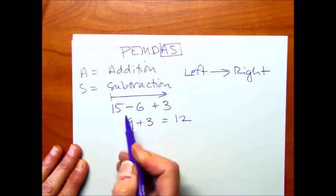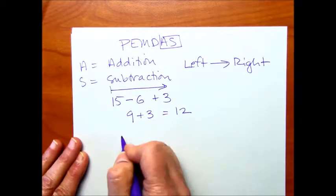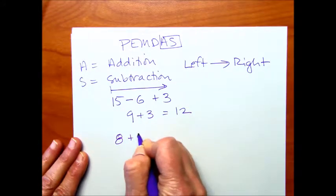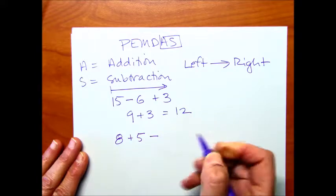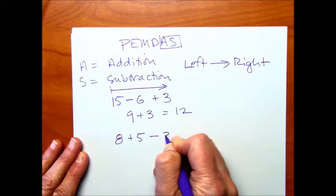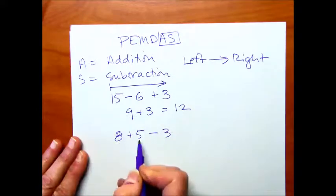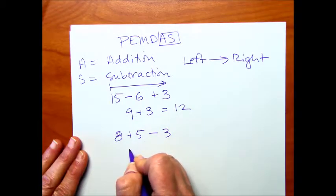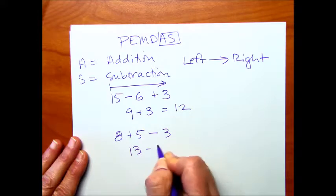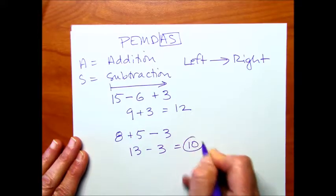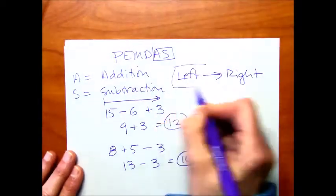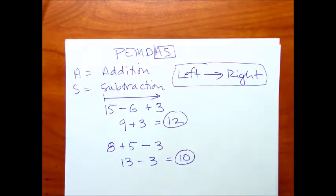Or we might have it reverse. Let's say we have 8, and we're going to add 5, and then we're going to subtract 3. So 8 plus 5 is 13, and we're going to minus 3. And that gives us 10. So left to right when it's just add and subtract.